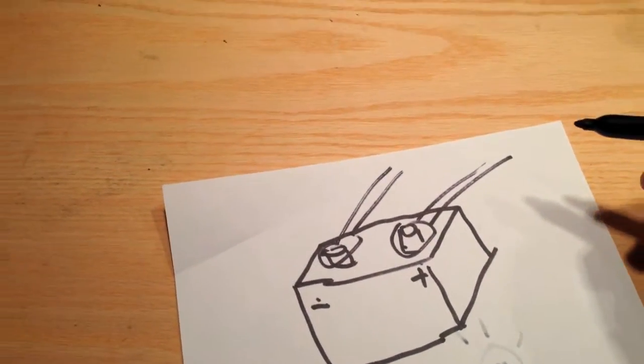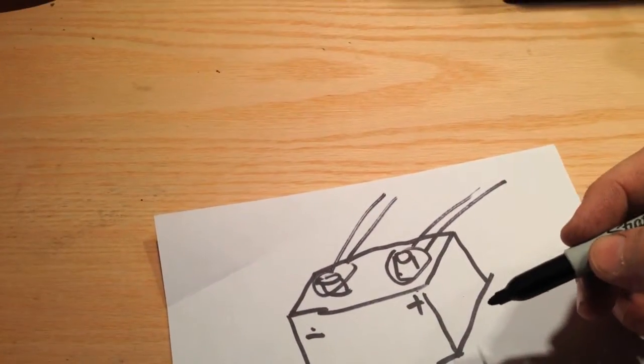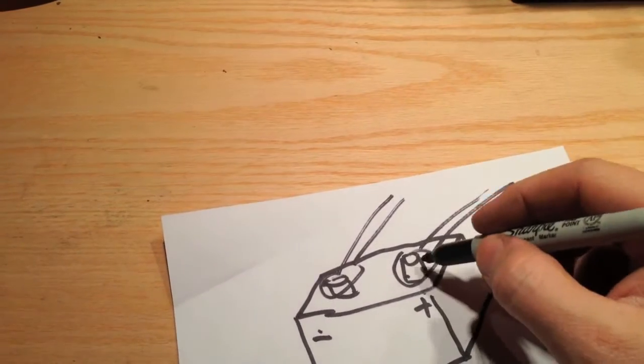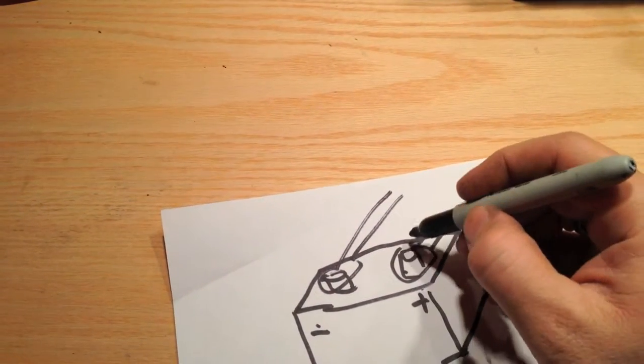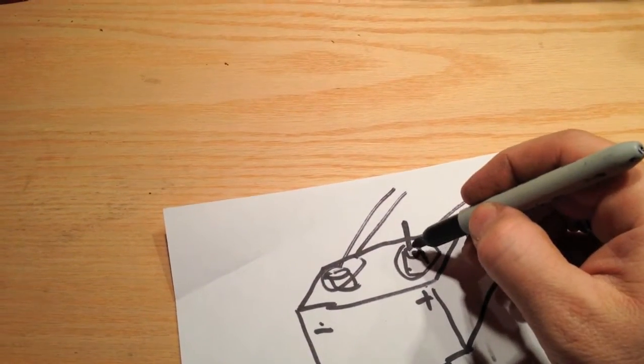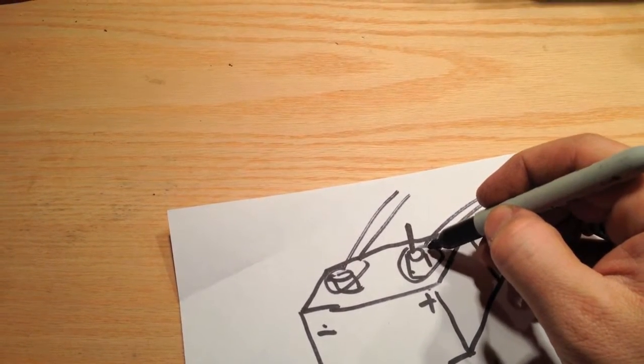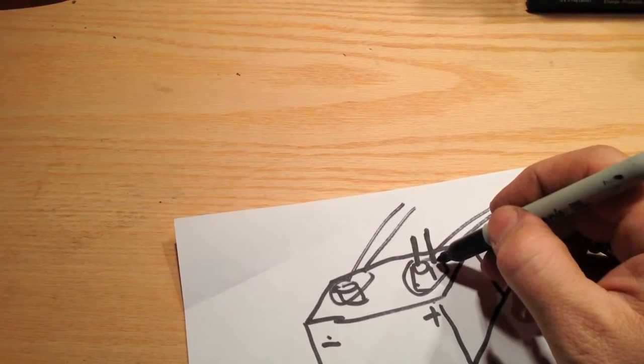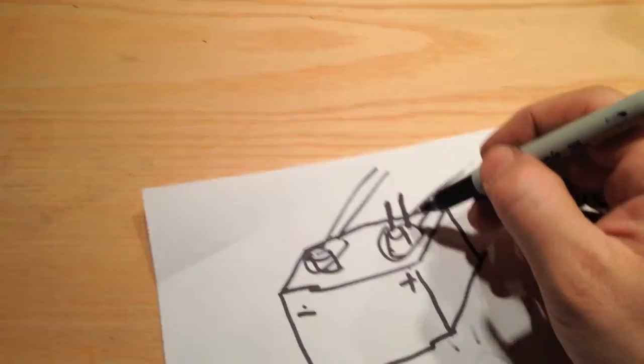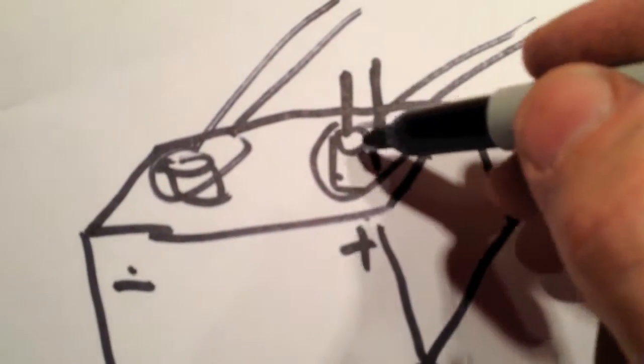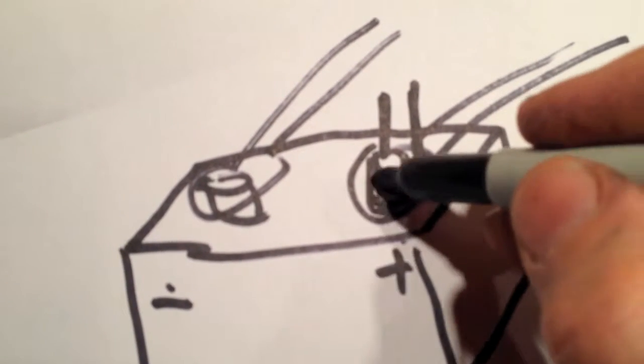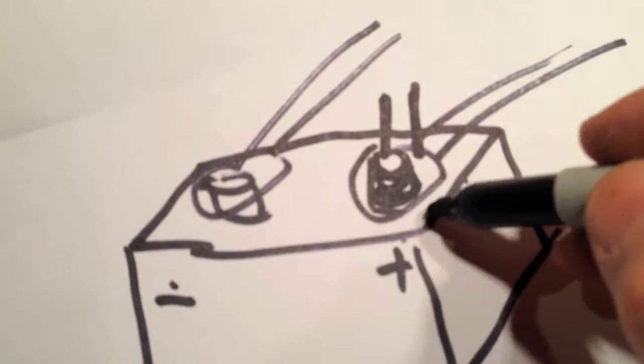What you need to first do is make sure there's a load on the battery. So turn a light on, have the door open, have the radio on. And then what you're going to do is actually take your probe and you're going to probe between the post of the battery, the center of the battery and right next to it, which is the cable clamp. And what you're trying to do is you're trying to see if there's any corrosion in this area between the battery post and the terminal.